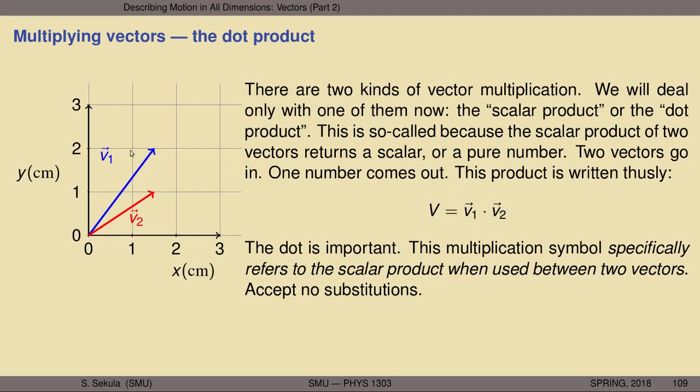If we take vector one, shown over here in blue, and we dot it — or scalar product it — with V2, shown here in red, the dot product of these two will, by construction, return a single number, capital V. The dot here is extremely important. There's another kind of multiplication that involves a crossing X symbol or the times symbol — it is a very different kind of multiplication. Notation is extremely crucial when multiplying vectors. For vectors, dot means scalar product, and the crossing X or times symbol means something else. Accept absolutely no substitutions when talking about the scalar product.